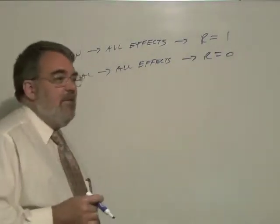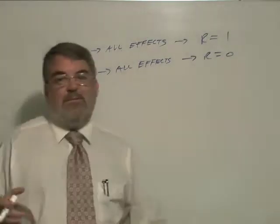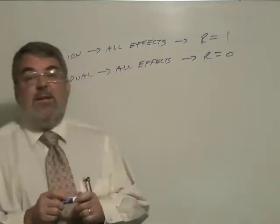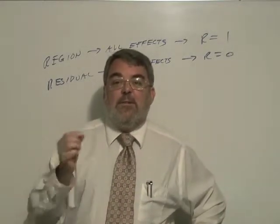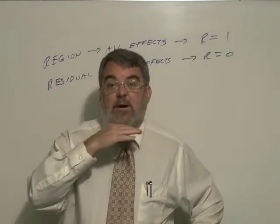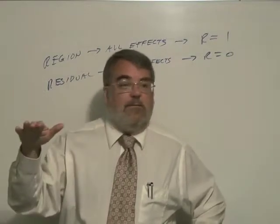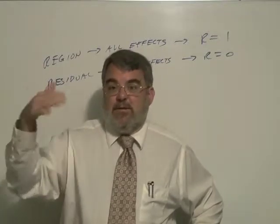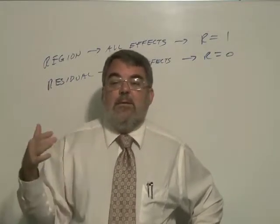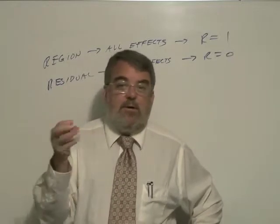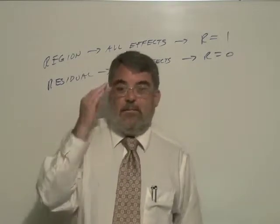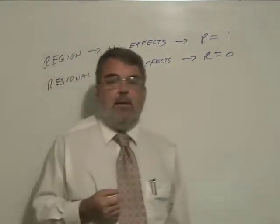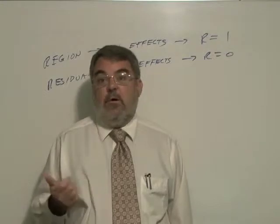Now this question, 11.7, what if neither one has an effect? Then if neither one has an effect, that means that every state will have the same crime rate. So if every state had a crime rate of 460 per 100,000 population, then there would be no differences between the states, there would be no differences by region, so there would be no residual effects, there would be no categorical variable or independent variable effects. And so what would R be equal to?